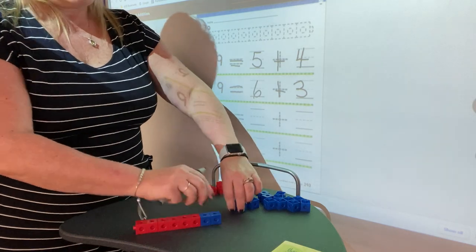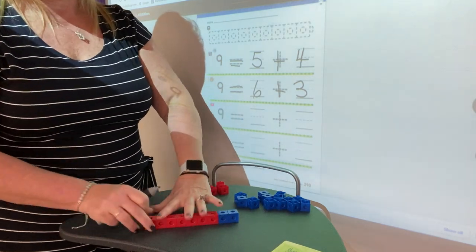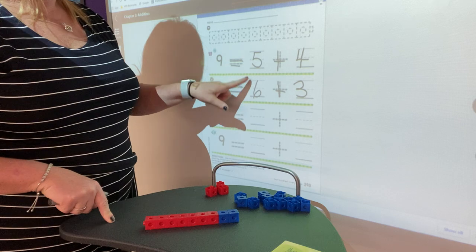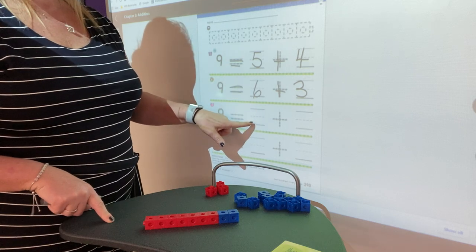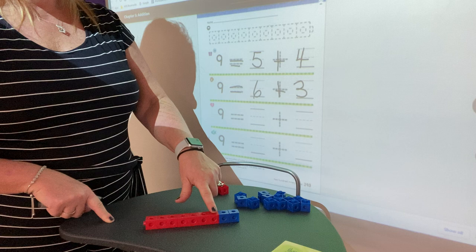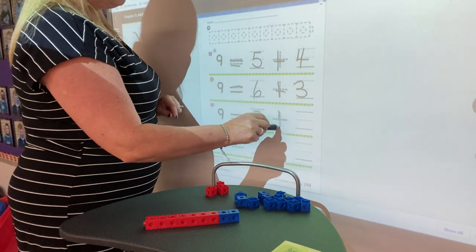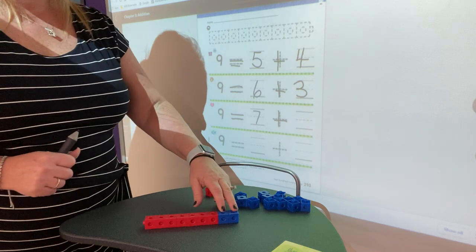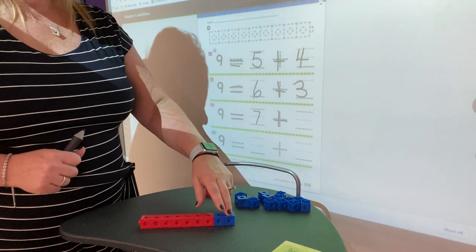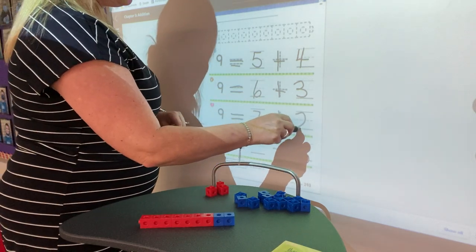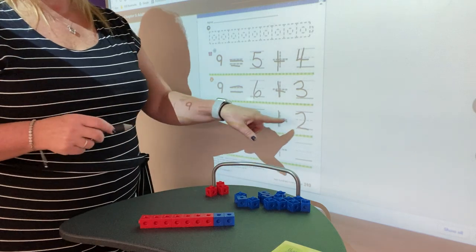Take away a blue, add a red. How many do you think we'll have? 1, 2, 3, 4, 5, 6, 7. 9 is equal to 7 plus how many blues? 1, 2. 2 blues. 9 is equal to 7 plus 2.